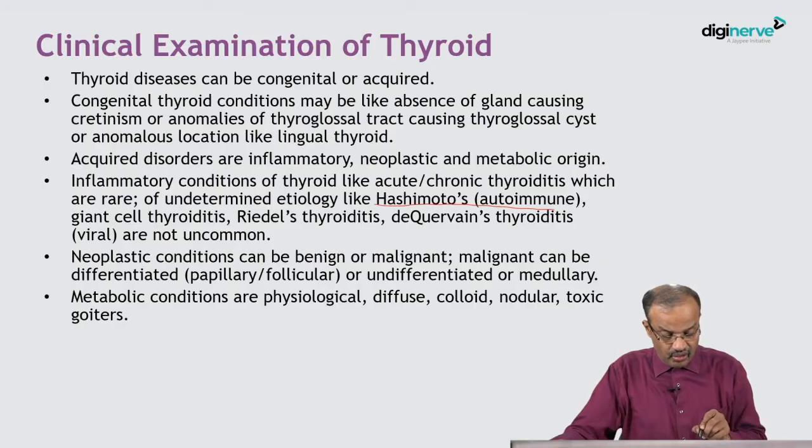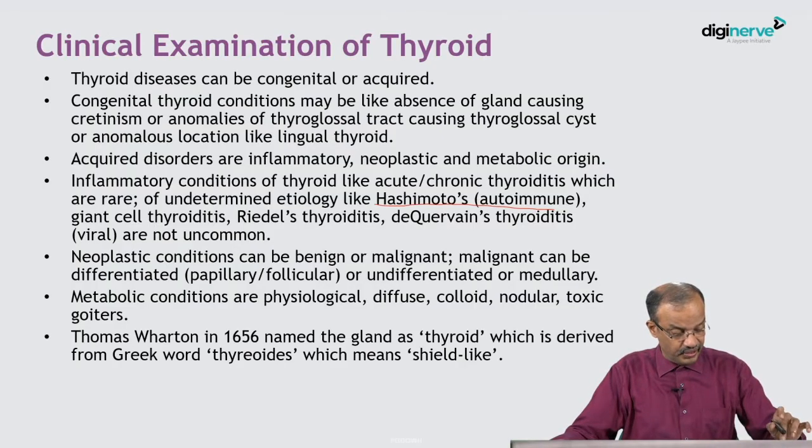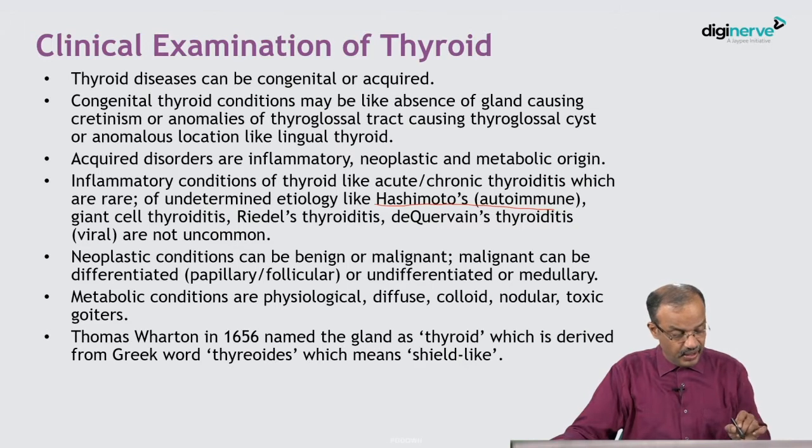Metabolic conditions include physiological, diffuse colloid, nodular, toxic, and other types of goiters.